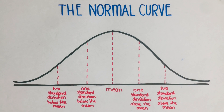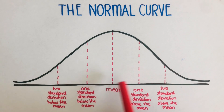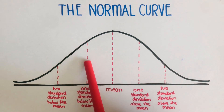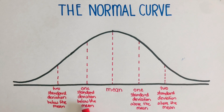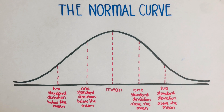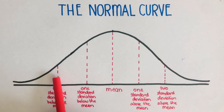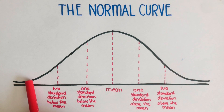Another important feature of the normal curve is that it is divided into segments. From the mean, the first line is one standard deviation below the mean. Standard deviation is a number that tells us how spread apart the values are. The next line is two standard deviations below the mean, and then three standard deviations below the mean.